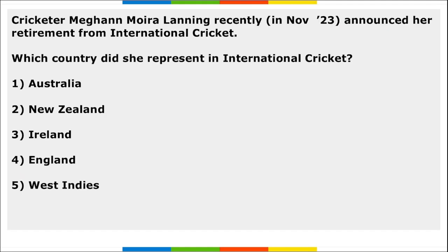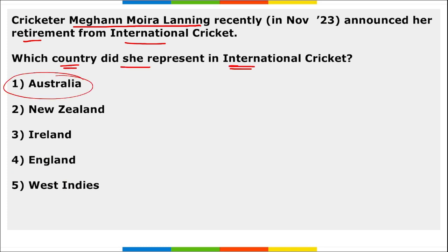Next: cricketer Megan Schutt has announced her retirement from international cricket. She used to play for Australia, took retirement at the age of 31, and was nicknamed 'Megastar.'